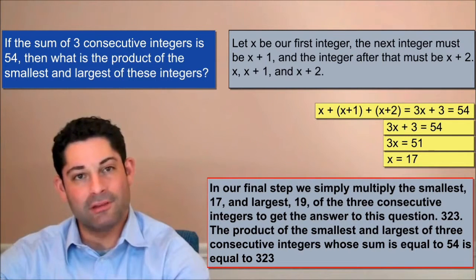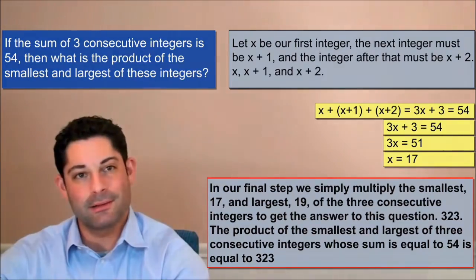The product of the smallest and largest of three consecutive integers whose sum is equal to 54 is equal to 323.